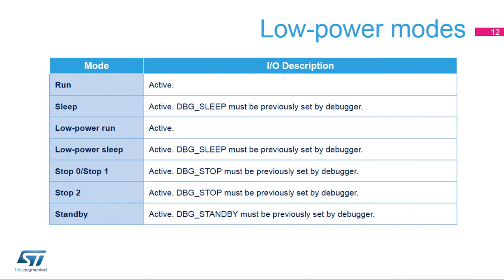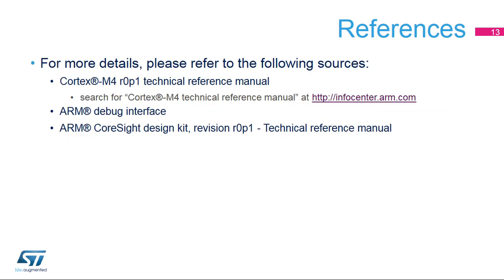The debug interface operates in all low-power modes. For sleep, stop, and standby modes, related bits must be configured in the DBG_MCU_CR register in order to prevent the clock and regulators from stopping when entering a low-power mode. For more technical details, visit the infocenter.arm.com website.